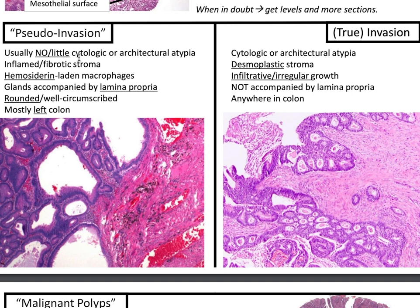Pseudo-invasion typically shows no to little cytologic or architectural atypia, with inflamed fibrotic stroma, hemosiderin-laden macrophages, glands accompanied by lamina propria, rounded well-circumscribed contours, and is mostly seen in the left colon. True invasion, in contrast, shows cytologic or architectural atypia with cribriforming, desmoplastic stroma, infiltrative irregular growth, glands not accompanied by lamina propria, and can occur anywhere in the colon.